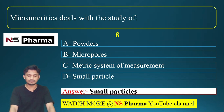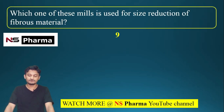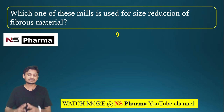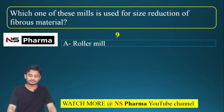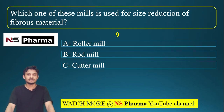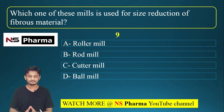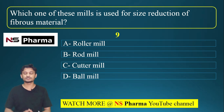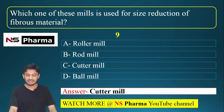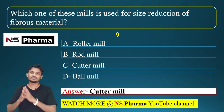Question number 9: which one of these mills is used for size reduction of fibrous material? Options are roller mill, rod mill, cutter mill, or ball mill. The correct answer is option C, cutter mill. Cutter mill is used for size reduction of fibrous material. These 10 questions are from the Pharmaceutics 1 subject, which comes under first year pharmacy.